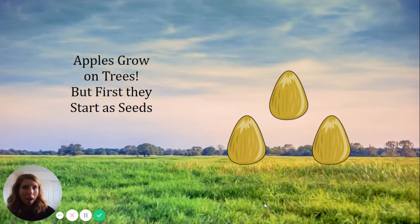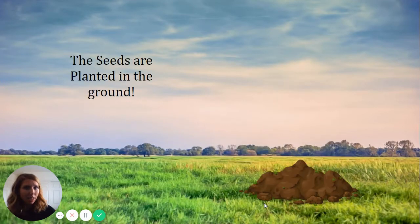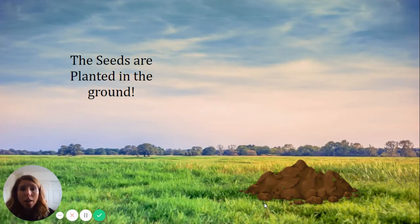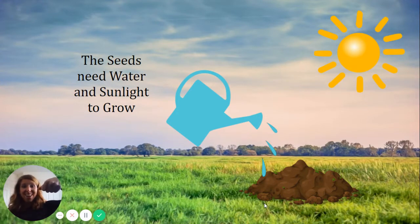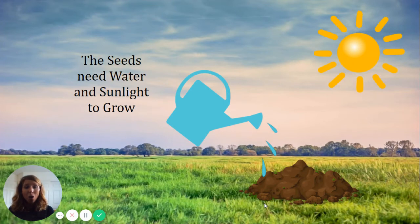Let's see what happens next. The seeds are planted in the ground. Somebody dug a hole and put the seeds in the ground. The seeds need water and sunlight to grow. I hope we get a big apple tree!